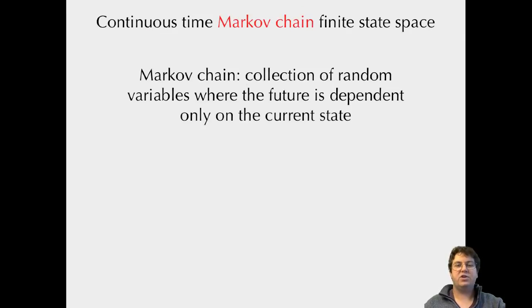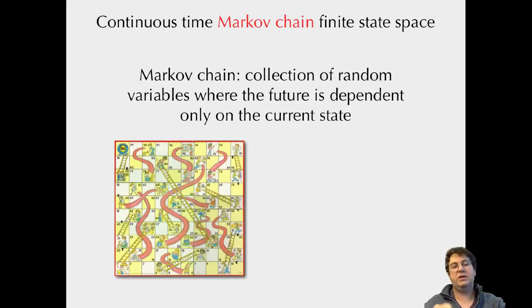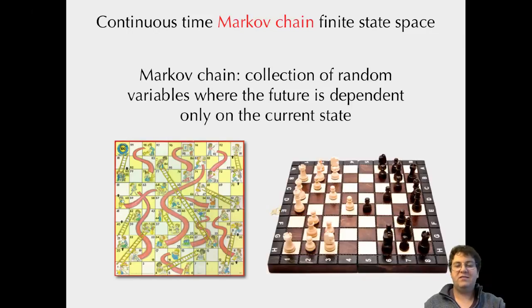A Markov chain is a collection of random variables where the future is dependent only on the current state. An example is the kid's game Chutes and Ladders — if you're on square 76, where you go next depends only on where that square is and what you roll. It doesn't matter if you came there by going up a ladder or linearly along the board. Similarly in chess, where the knight can move next depends only on the current board, not on where it was 10 moves ago.